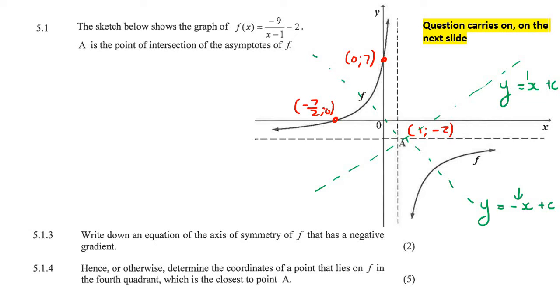and it's always negative one. See how I've got a negative one there? You can fill in the one if you want. And then this one always has a positive one. That's always the case with hyperbolas. Now, they've asked us, write down an equation of the axis of symmetry that has a negative gradient. So they want this one.